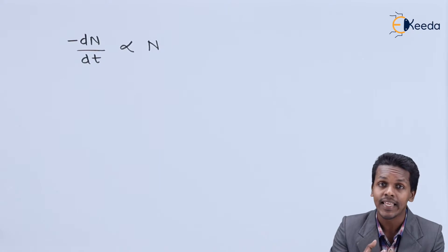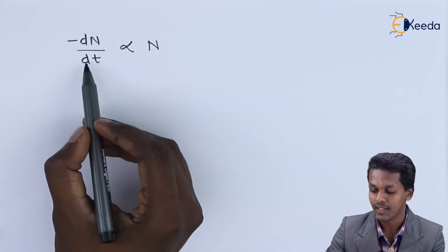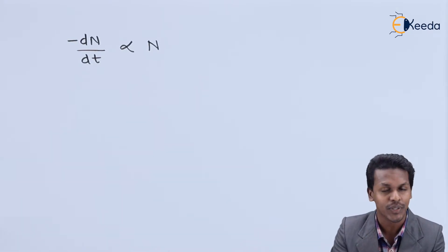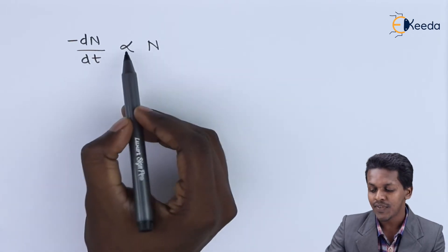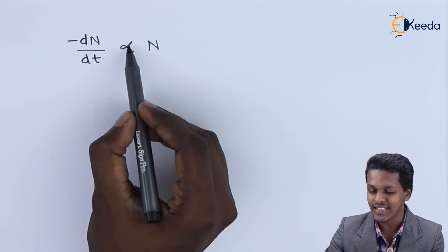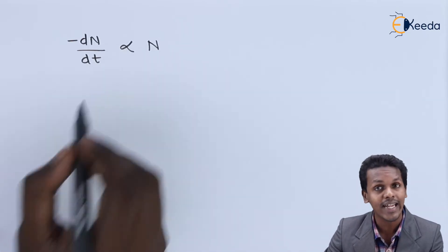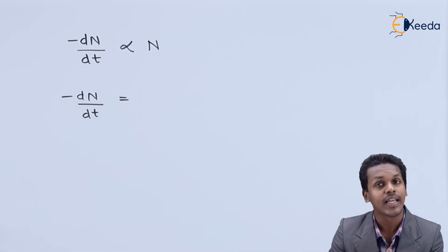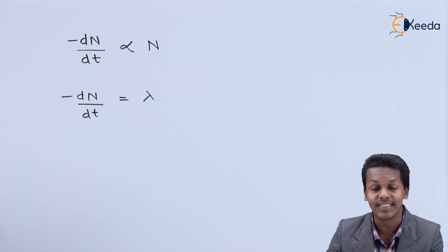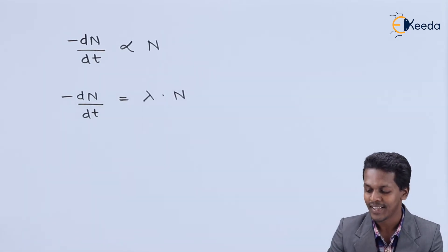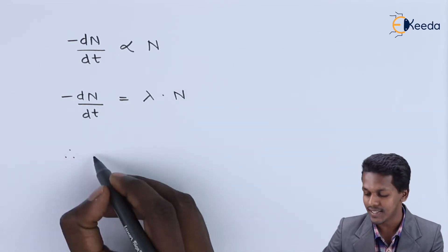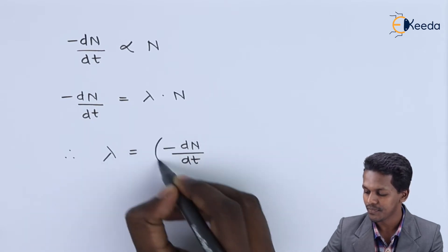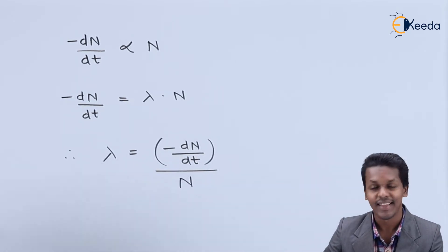Here, dn represents the amount of substance that has been decayed with respect to time, and n represents the amount present at initial time t. Since there is a proportionality, we can write this equation as: minus dn/dt is equal to a constant times n, where that constant is the decay constant. Therefore, the decay constant lambda equals minus dn/dt divided by n.